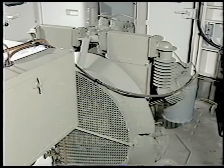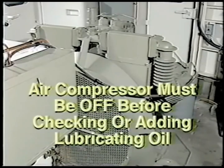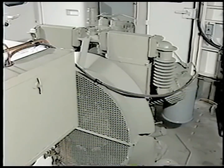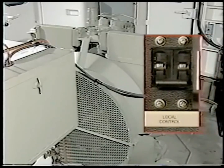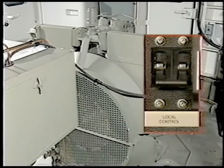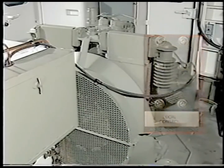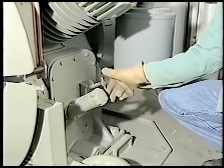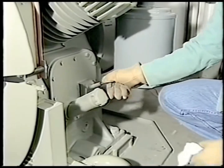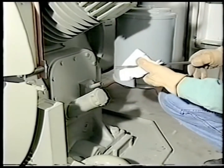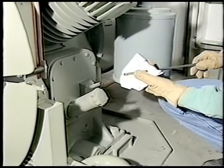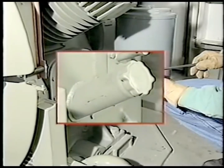The air compressor must be off before checking or adding lubricating oil. The local control circuit breaker, located on the second row of breakers on the EC panel, must be turned off before performing either procedure. The oil dipstick is used to determine lubricant level. Oil may be added through the fill cap.